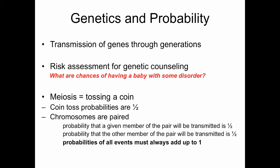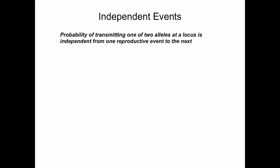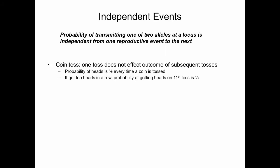Chromosomes are paired, so the probability that a given member of a pair will be transmitted to one gamete is a half, and the probability that the other member of the pair will be transmitted to the gamete is also a half. This highlights the fact that the probability of all events must always add up to equal one. The probability of transmitting one of two alleles at a locus is independent from one reproductive event to the next — one coin toss does not affect the outcome of subsequent coin tosses.